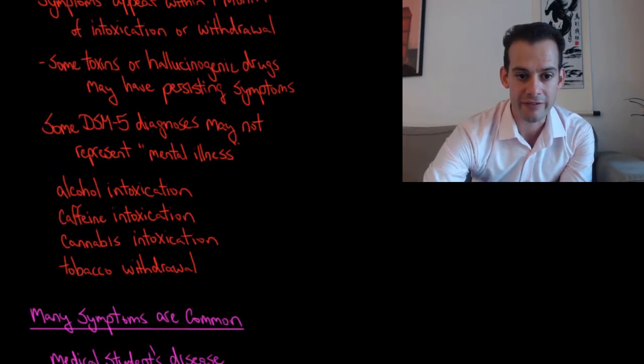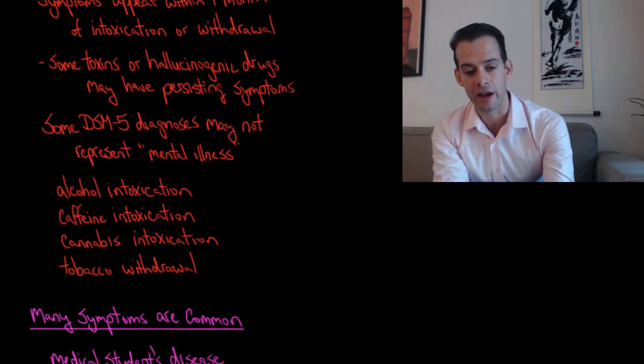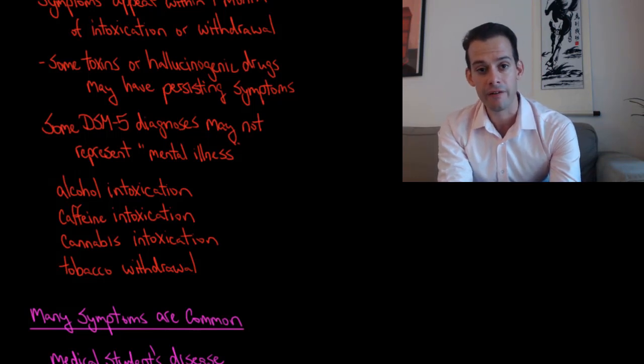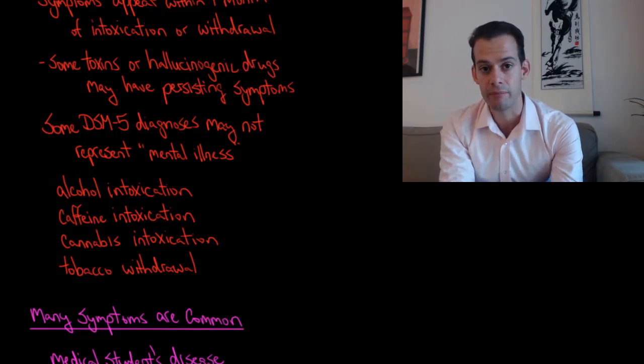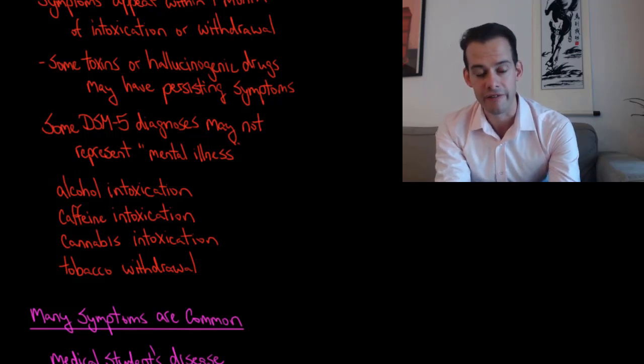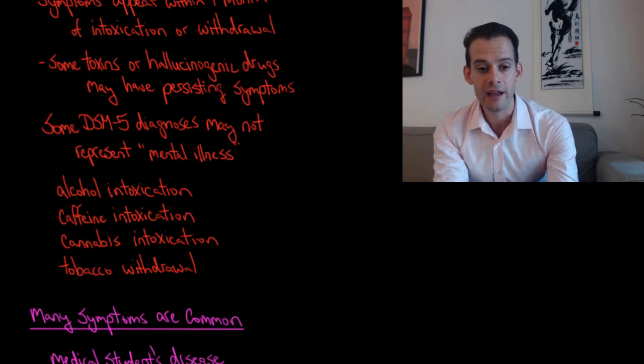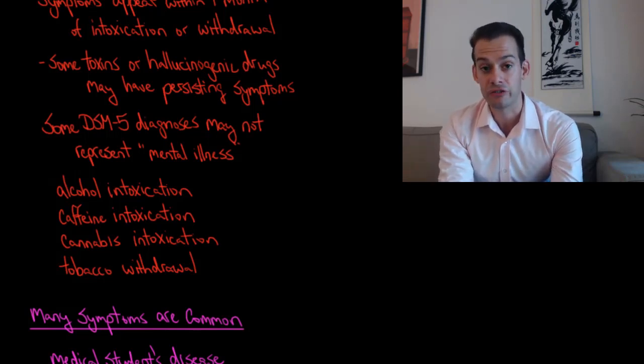So to give you an example, in the DSM-5 you can find things like alcohol intoxication. And what this means is if somebody went to a psychiatrist and they had a number of symptoms that might be associated with mental illness, if it turns out that the person's blood alcohol level is very high and they meet these criteria for alcohol intoxication, then it would probably be considered that the person is just drunk.